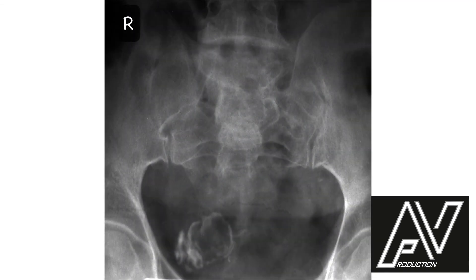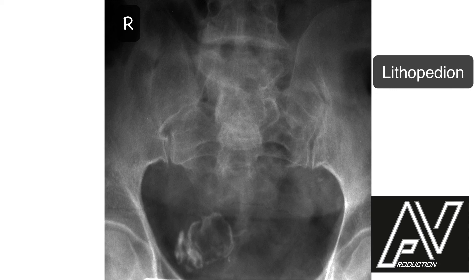This is a plain x-ray of the pelvis, AP view, showing a calcified shadow which resembles a small collapsed fetus. The crumpled skull vault bones can be seen very well. Therefore, my provisional diagnosis is a lithopedion.